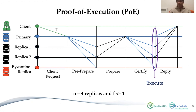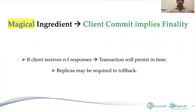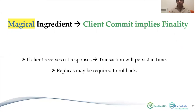The key ingredient PoE has designed: if a client commits a transaction, then that transaction will persist in time. It is possible that replicas may be required to roll back a transaction — for example, if the primary is malicious and equivocates by sending different transactions to different replicas. But if a client has received messages from a majority of replicas, then that transaction is final.